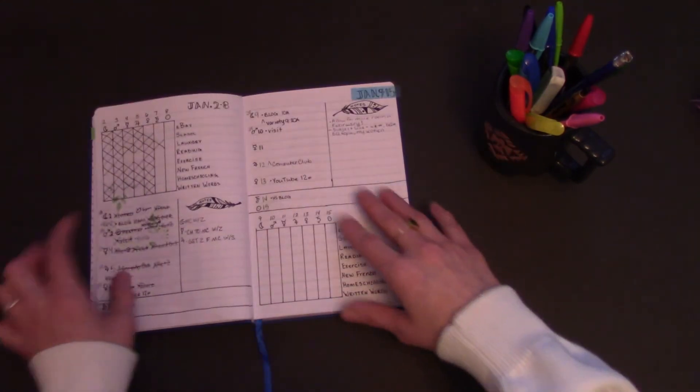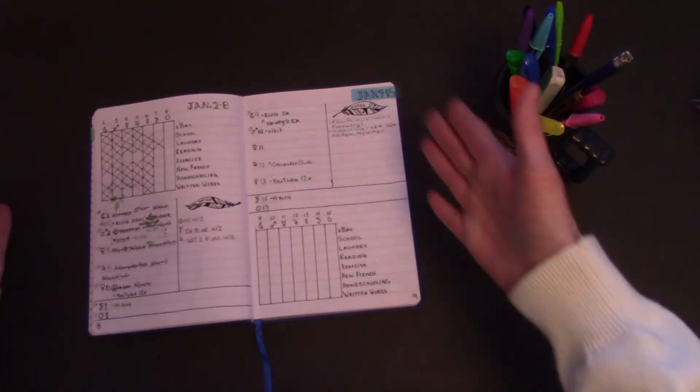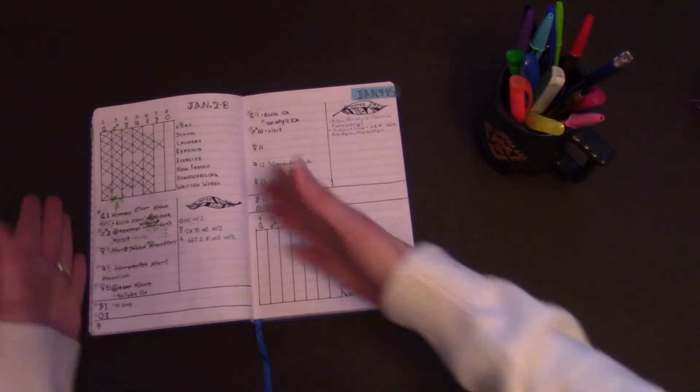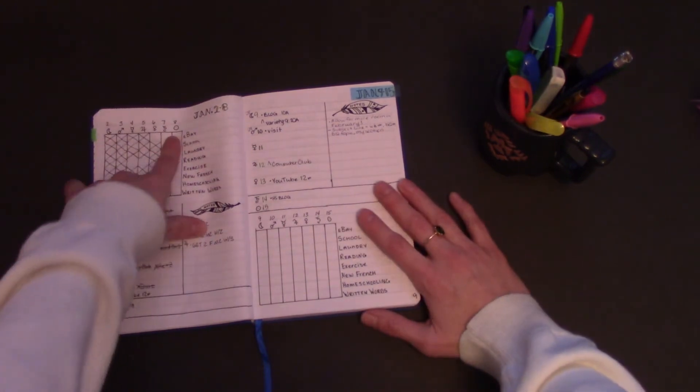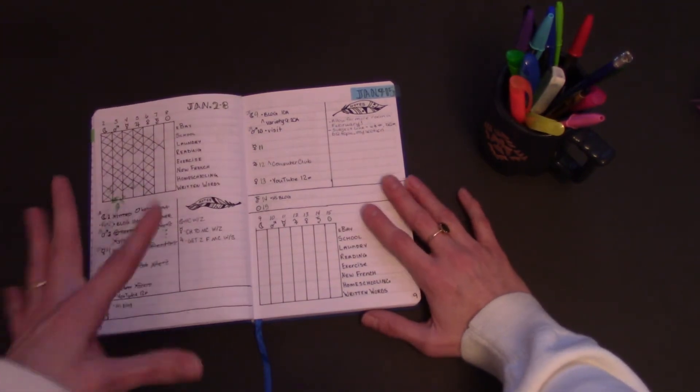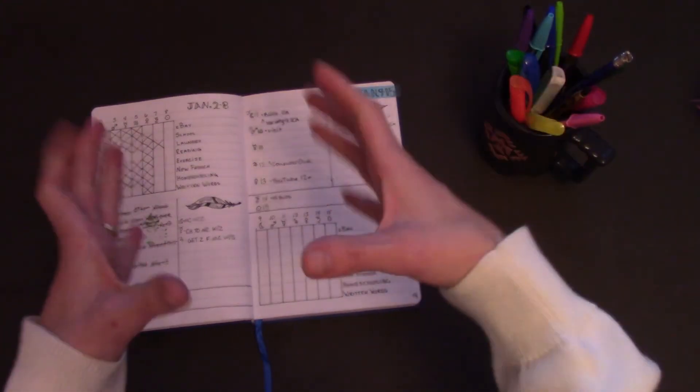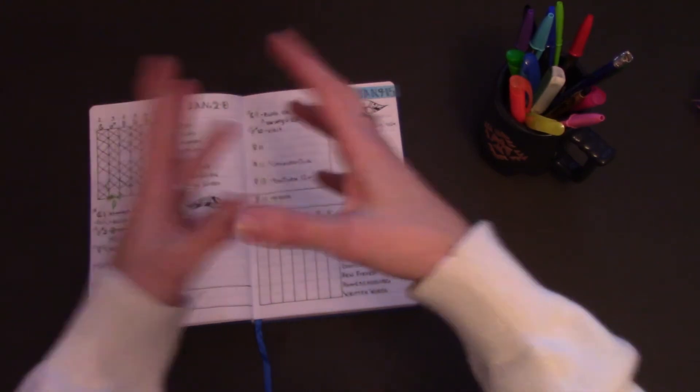And the last thing I'm going to show you is this. This is a spread, it's two weeks. So this is January 2nd through 8th and this is January 9th through 15th. I start on Mondays and keep the weekends together, Saturday, Sunday, and it helps me enjoy my weekend as a whole unit instead of cutting it into two pieces.